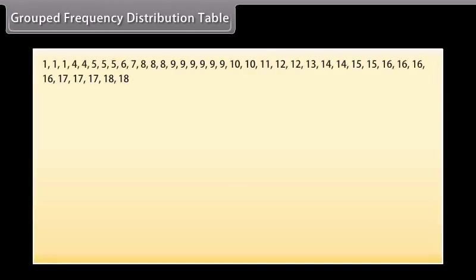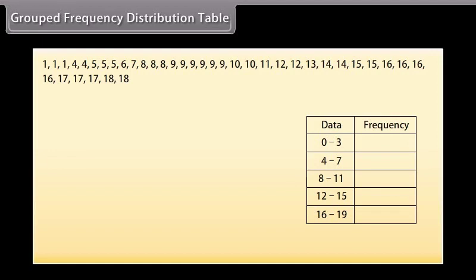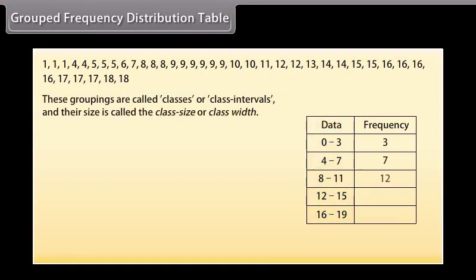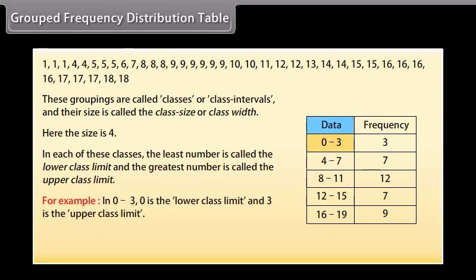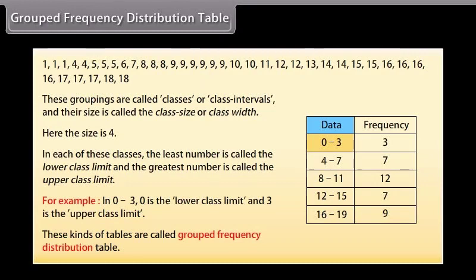Grouped frequency distribution table. And so on till 16 to 19, since our data is from 1 to 18. These groupings are called classes or class intervals, and their size is called class size or class width. Here the size is 4. In each of these classes, the least number is called the lower class limit and the greatest number is called the upper class limit. For example, in 0 to 3, 0 is the lower class limit and 3 is the upper class limit. These kinds of tables are called grouped frequency distribution tables.